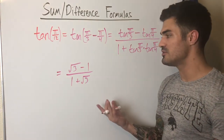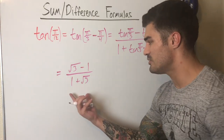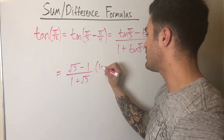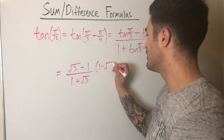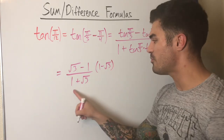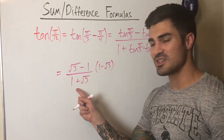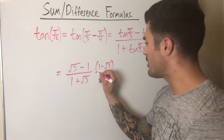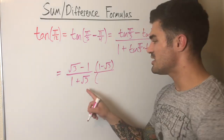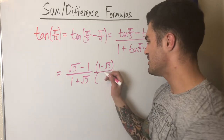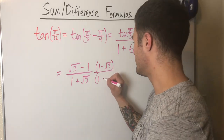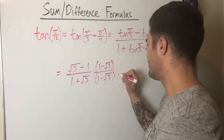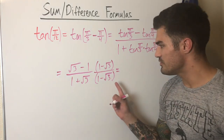Most instructors will want you to rationalize the denominator and simplify as much as possible. We use the conjugate — whatever we have on the bottom, we switch the sign in between — and multiply both top and bottom by it. This eliminates the radicals in the denominator.